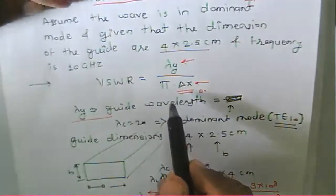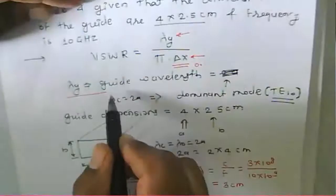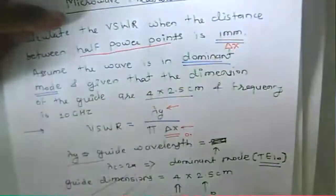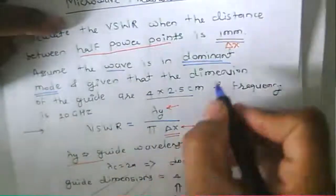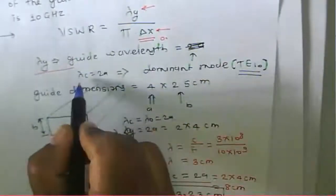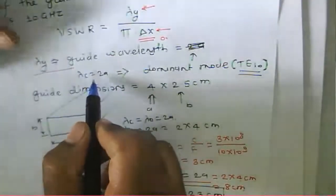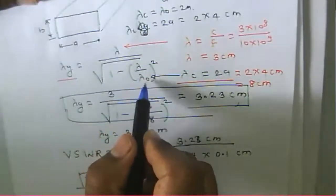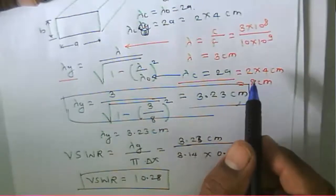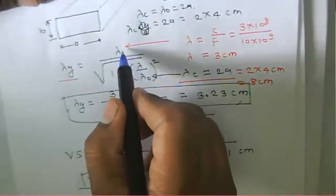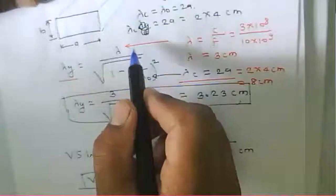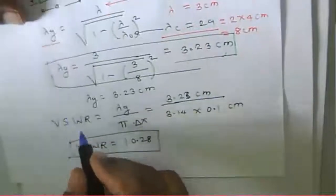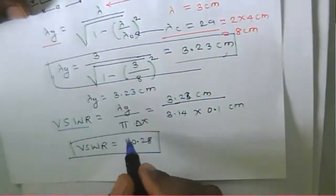VSWR is equal to lambda g divided by pi times del x. To obtain the guide wavelength, since the signal propagates in the dominant mode — TE10 mode — the cutoff wavelength is twice a, so lambda c equals 8 cm. Lambda g is equal to lambda divided by the square root of one minus lambda over lambda c.